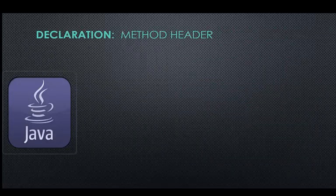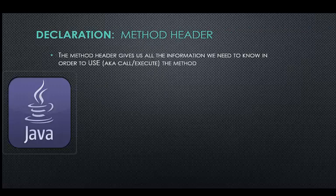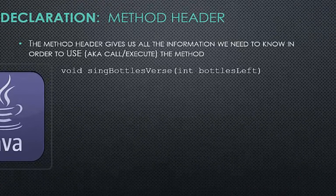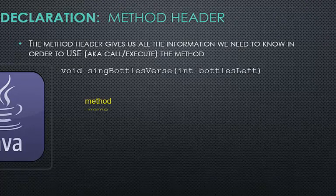The declaration of the method is accomplished by the header of the method. The methods header gives us all the information we need to know in order to use or call the method. Let's look closely at the 99 Bottles of Beer, Sing Bottles Verse method. We named it Sing Bottles Verse. It's good programming practice to use meaningful names for variables and methods. This name clearly states the purpose of the method, to produce the verse of the song.